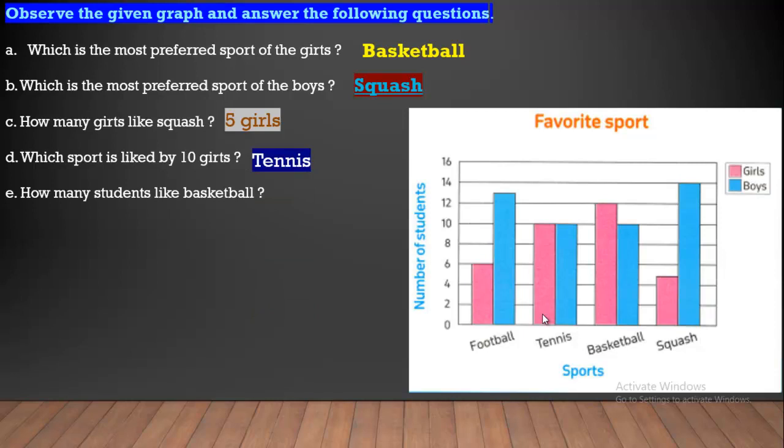How many students like basketball? It means that boys and girls together. Basketball, we have ten and twelve. So we have ten plus twelve is twenty-two.